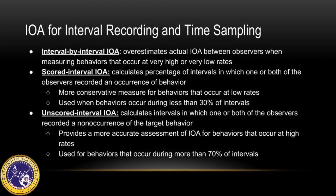Interval by interval IOA overestimates the actual IOA between observers when measuring behaviors that occur at very high or very low rates. Scored interval IOA calculates the percentage of intervals in which one or both observers recorded an occurrence of behavior, and it is recommended when behaviors occur during less than 30% of intervals. Unscored interval IOA calculates the intervals in which one or both observers recorded a non-occurrence and provides a more accurate assessment for behaviors occurring during more than 70% of intervals.